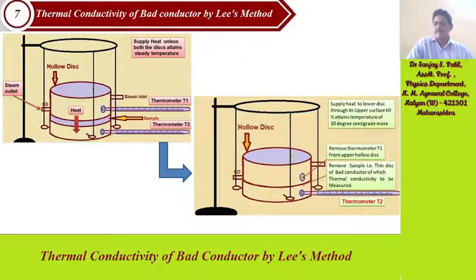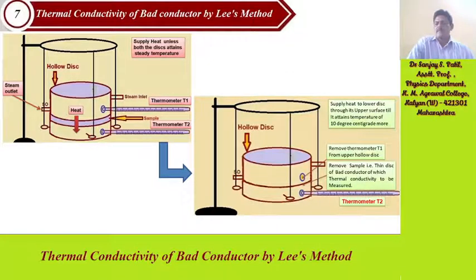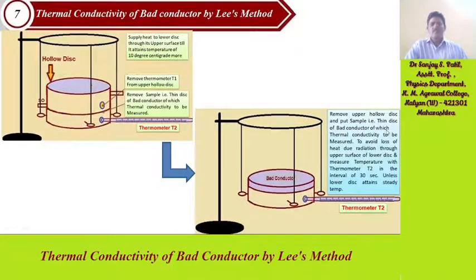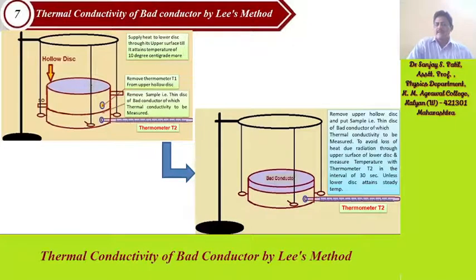Provide heat through the upper hollow disk until the lower disk attains a temperature of 10 degrees centigrade more than theta2, as noted with thermometer T2. Supply heat to the lower disk through its upper surface until it attains that temperature. Then remove the upper hollow disk and place the slice of bad conductor back on the upper surface of the lower disk and take readings.